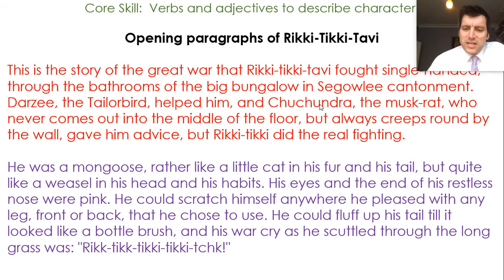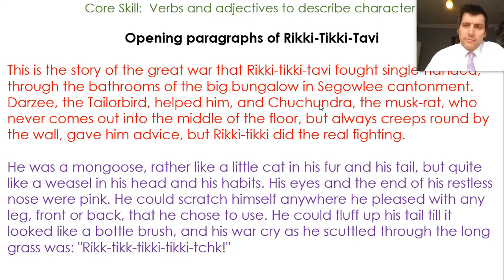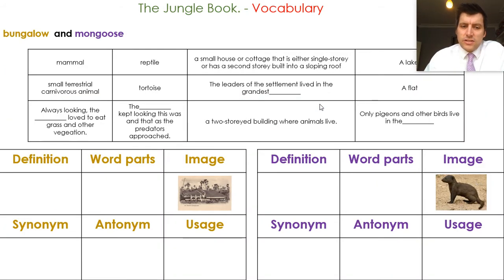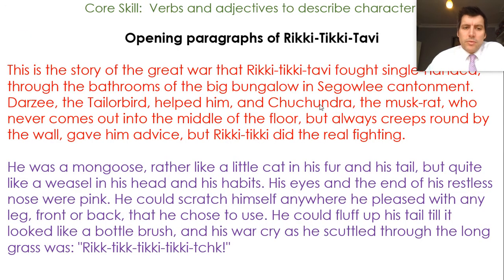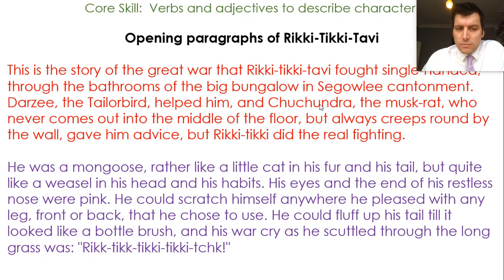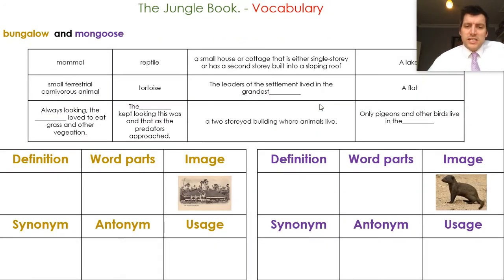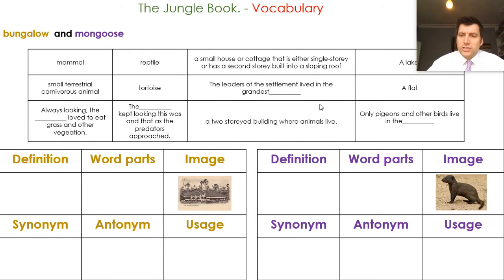So we've got this element of a story now and we're starting to unpick it. The first job is to think about the vocabulary that's been used here. We look at bungalow and mongoose. Bungalow was used in the phrase 'the big bungalow in the Segowlee cantonment,' and mongoose starts the purple section. The top section of the page has some possible language you could include in the vocabulary maps — mammal, reptile, a small house or cottage — and it's all got mixed up.